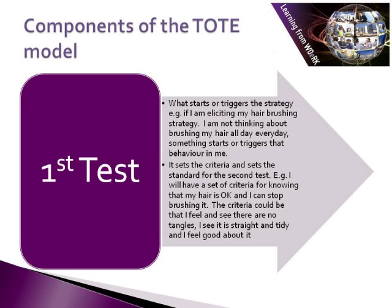Let's think about the different components of the TOTE model and how it all works. The first test comprises two things: what triggers the strategy, and it sets the criteria for the second test. The trigger is what happens usually outside the person that starts the strategy. For example, if I want to elicit my hair brushing strategy, I don't spend all day thinking about brushing my hair. There's something that happens that lets me know it's time to brush my hair — perhaps once I brush my teeth in the morning I look in the mirror and look at the state of my hair. So looking in the mirror is the trigger that starts the strategy. This will all be unconscious — until I'm asked, I probably have no conscious knowledge of this process. It just happens.